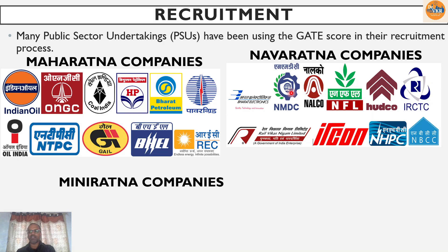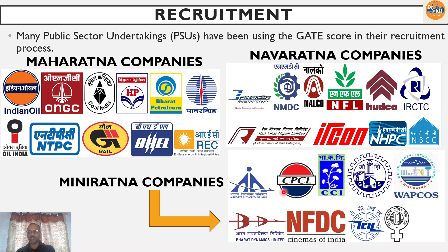Navratna companies include NMDC, NALCO, NFL, HPCL, IRCTC, IRCON and others. Miniratna companies are CPCL, CCI, WAPCOS, NFDC, BDL and others. In these central government undertaking companies, GATE qualification is one of the important criteria for shortlisting for the remaining process. Those who focus on GATE can also target central government jobs.